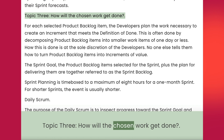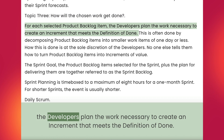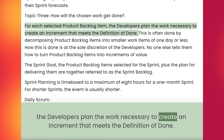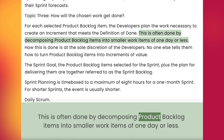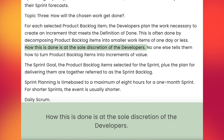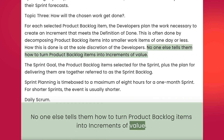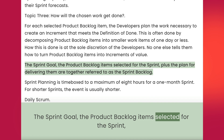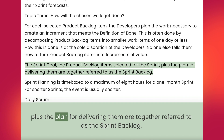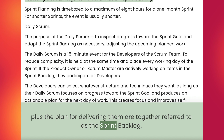Topic 3: How will the chosen work get done? For each selected product backlog item, the developers plan the work necessary to create an increment that meets the definition of done. This is often done by decomposing product backlog items into smaller work items of one day or less. How this is done is at the sole discretion of the developers. No one else tells them how to turn product backlog items into increments of value. The sprint goal, the product backlog items selected for the sprint, plus the plan for delivering them are together referred to as the sprint backlog.